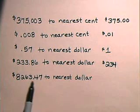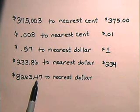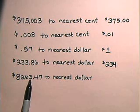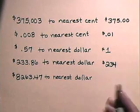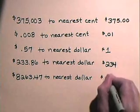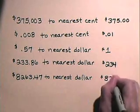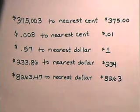Here, we're going to round to the nearest dollar. We look to the right of the dollars place — this digit remains the same because it is not five or greater. So to the nearest dollar, this will be eight thousand two hundred sixty-three dollars.